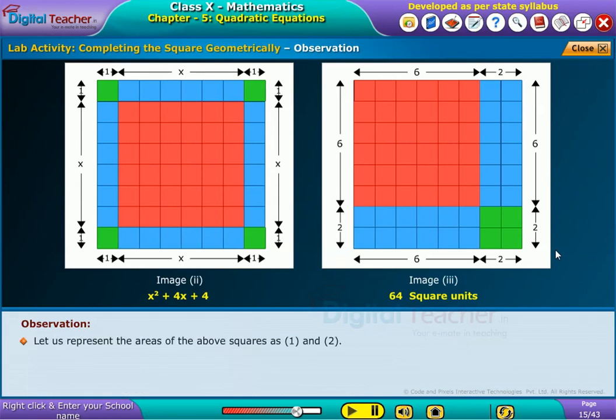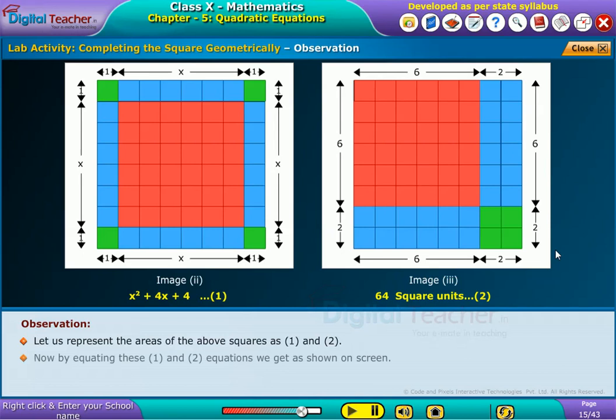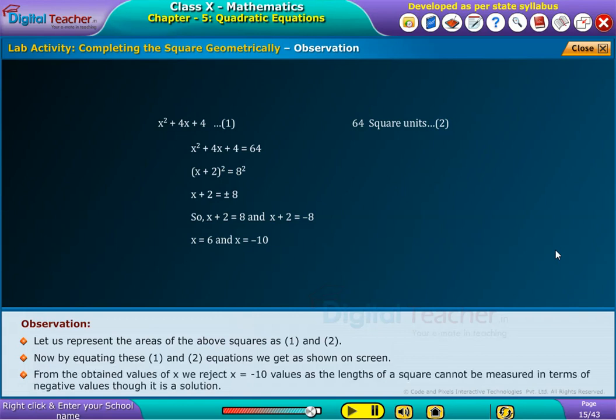Let us represent the areas of the above squares as equations one and two. Now, by equating these equations, we get as shown on screen. From the obtained values of x, we reject x = -10 as the length of a square cannot be measured in terms of negative values, though it is a solution.